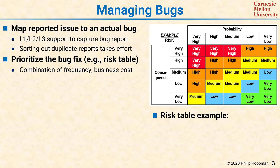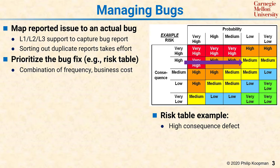Prioritizing the bug should be done using a combination of frequency and business cost. A good way to do that is to use a risk table. In a risk table, the consequence severity goes by row and the probability goes by column. You rank the consequence from very high to very low, and what those bins mean should be consistent but depends on your product — very high might mean a catastrophic system failure and very low might be a very minor annoyance.